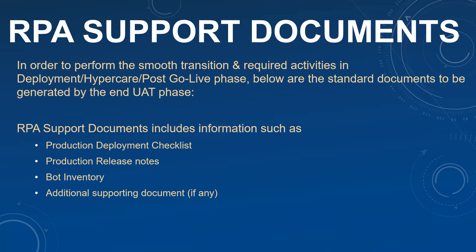There are three documents which are proposed. One is the production deployment checklist, next is the production release note, and then there is a bot inventory. But these are not the only documents which need to be presented or are suggested. Any additional documents you think can be of help for production migration or post-production go-live also need to be prepared and handed over to the support team for better management of the bot in production or even at the hypercare phase.